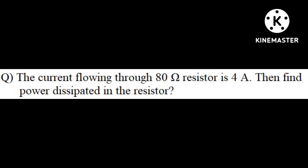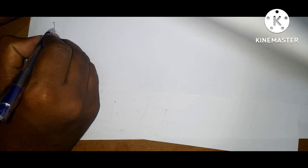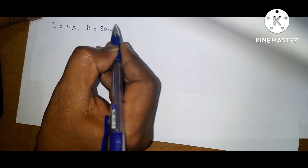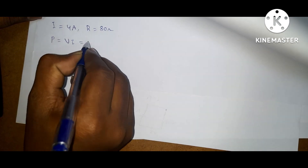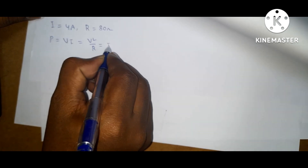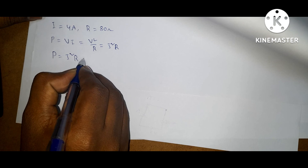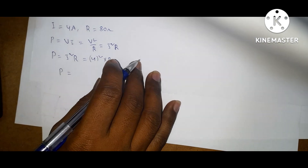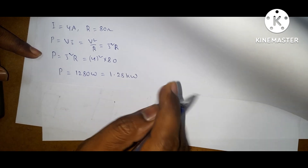Next question: the current flowing through an 80 ohm resistor is 4 amps. Find the power dissipated in the resistor. Given: current I is 4 amps, resistance R is 80 ohms. The formula for power is P equal to VI, or V square by R, or I square R. Since we know current and resistance, P is equal to I square R, which is 4 square into 80, giving power dissipated of 1280 watts, or 1.28 kilowatts.